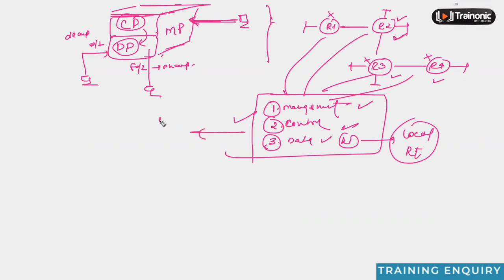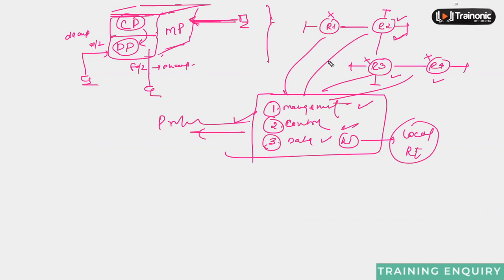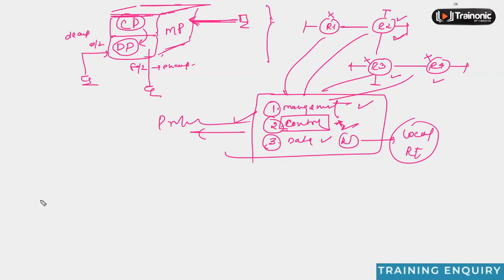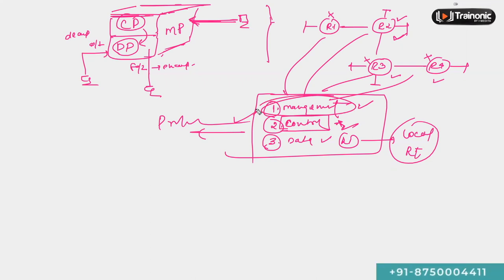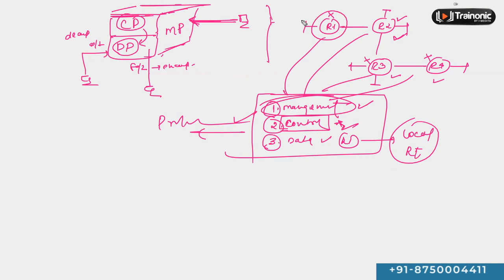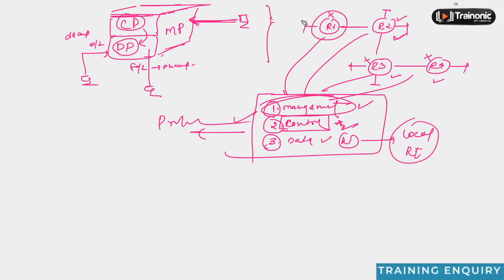This is exactly where the problem exists. What if the control plane of the device goes down? Since the control plane, data plane, and management plane are all on the same device, if the control plane fails or you cannot get management access to a particular device, everything on that device is affected.